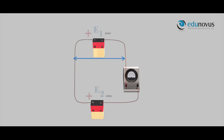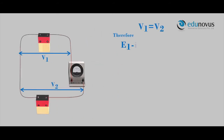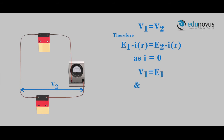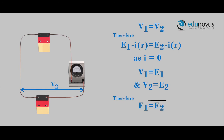In this case, the potential drop V1 equals V2. E1 minus IR equals E2 minus IR. As I equals zero, V1 equals E1 and V2 equals E2. Therefore, E1 equals E2.